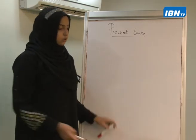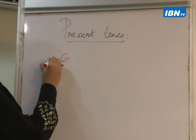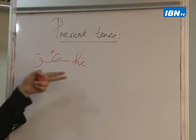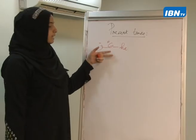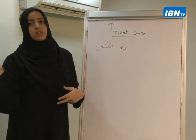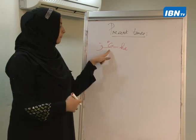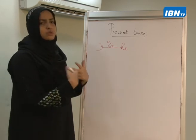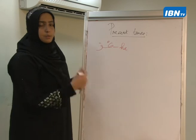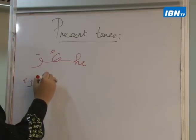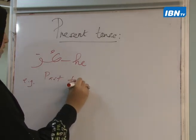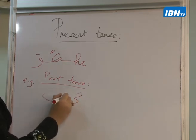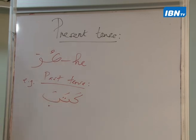We started off with huwa — third person, meaning 'he'. We started trying to convert the past tense into the present tense format. For example, in the past tense I have kataba, which means 'he wrote'.